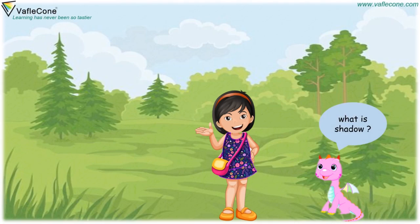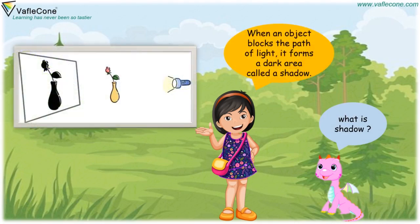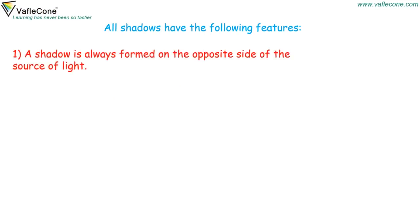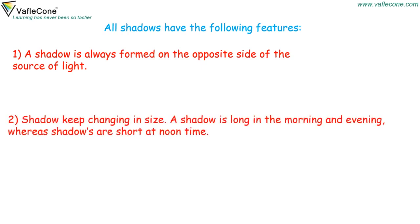What is shadow? When an object blocks the path of light, it forms a dark area called a shadow. All shadows have the following features: A shadow is always formed on the opposite side of the source of light. Shadow keeps changing in size — a shadow is long in the morning and evening, whereas shadows are short at noontime. A shadow is always black in color.